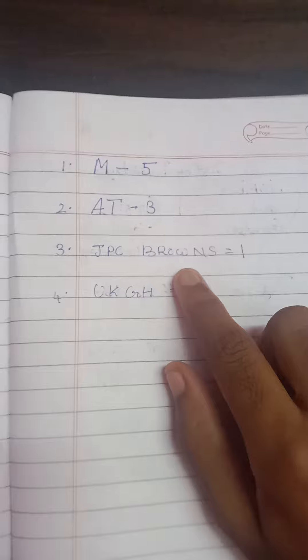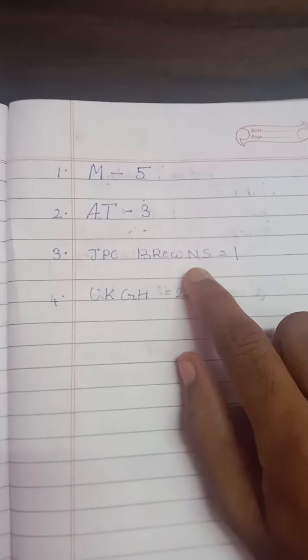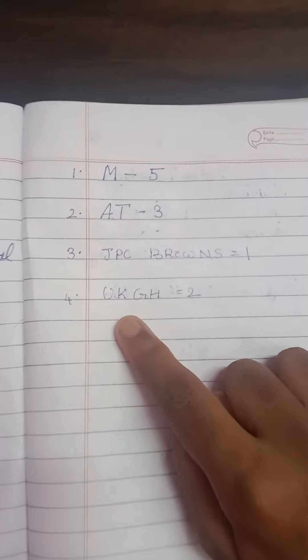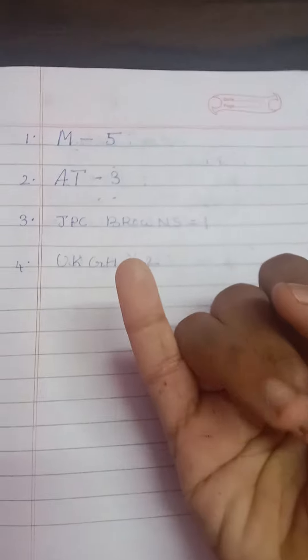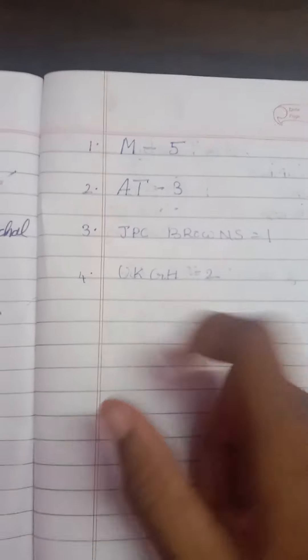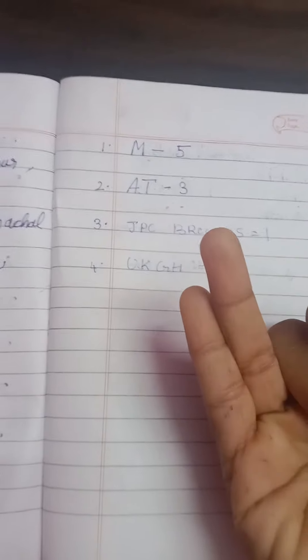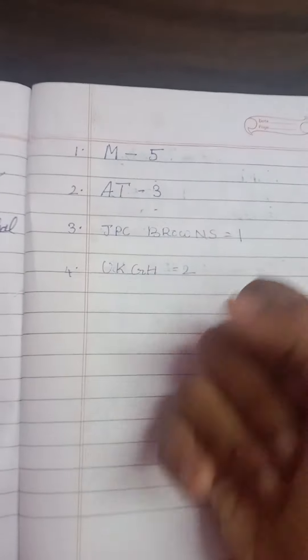N is for Nagaland. K is for Kerala and Karnataka. G is for Goa and Gujarat. H is for Haryana and Himachal Pradesh.